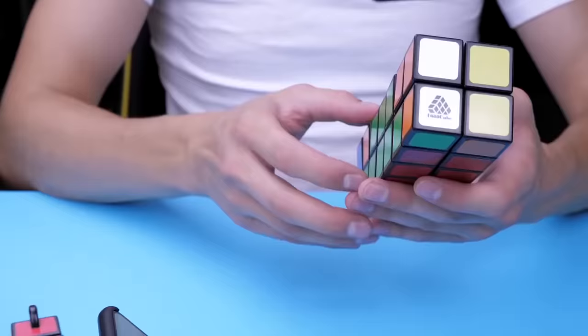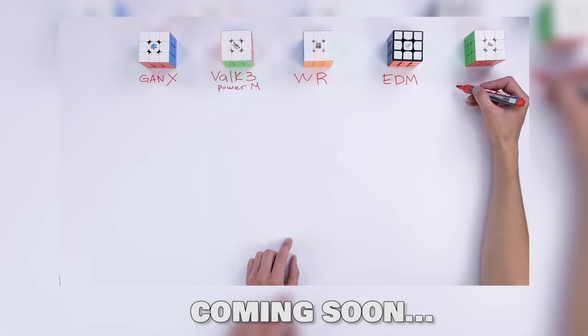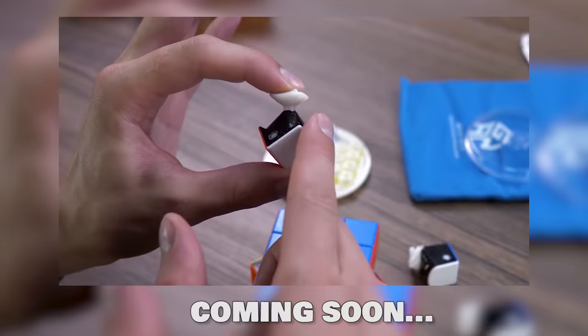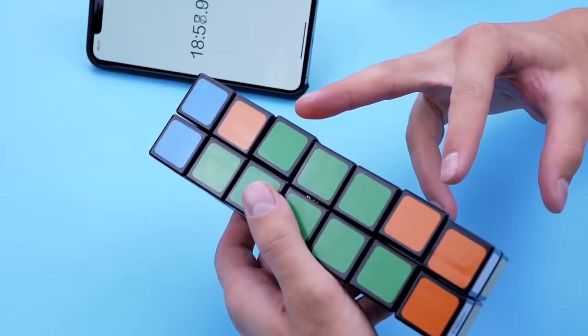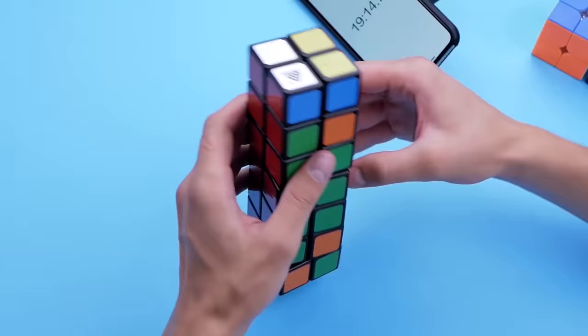By the way, folks, subscribe to the channel and turn on all notifications. Because in one of the next videos I will compare five coolest Rubik's Cubes. And together we will find the perfect Rubik's Cube to set the world record. So, don't miss out. I have reached almost the very end in the last two layers. My task now is to swap these two places. I don't understand how to do it yet, but now we will get it. Let's think together. If we think logically, how do I swap them?